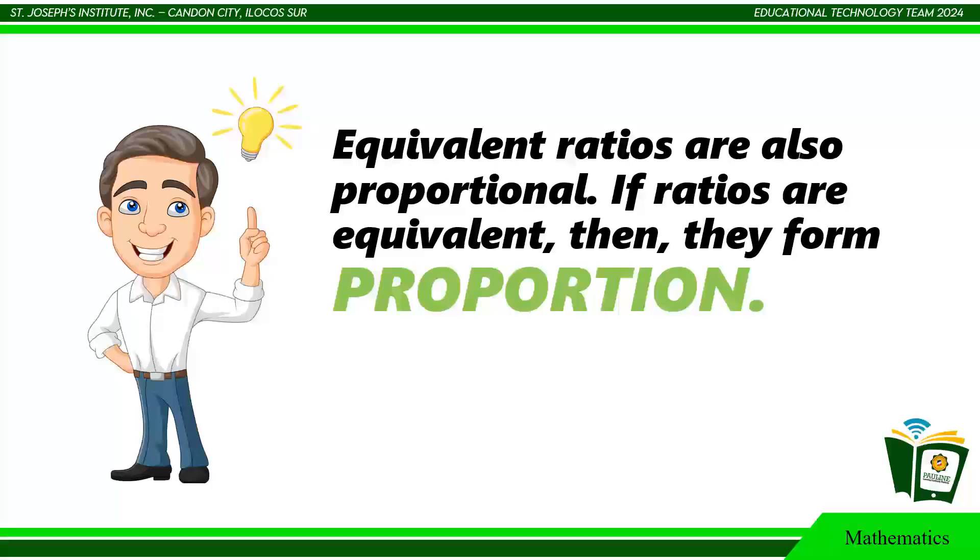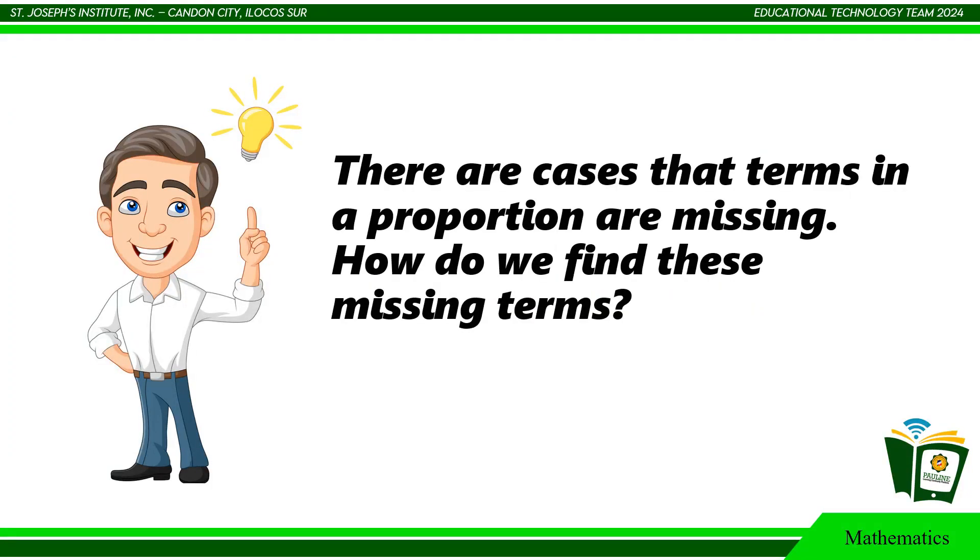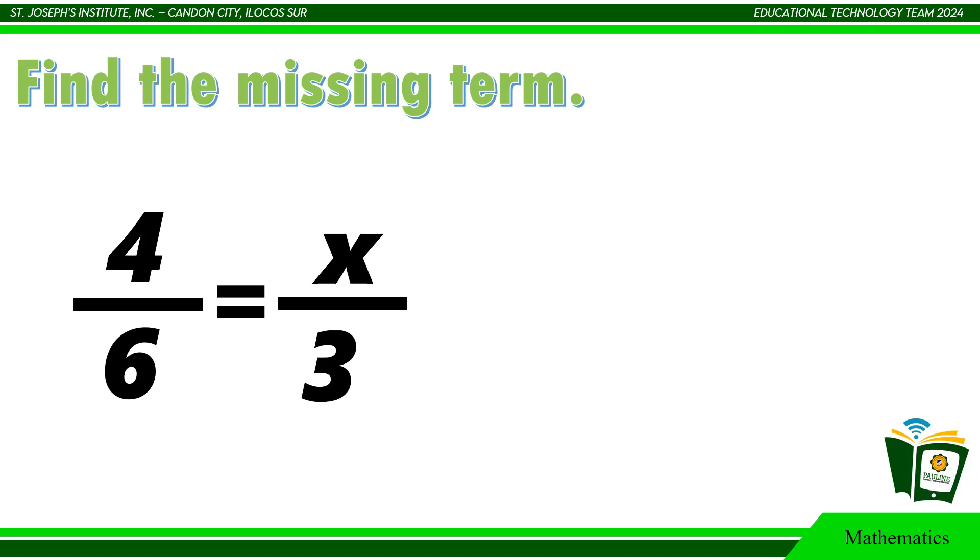There are cases that terms in a proportion are missing. How do we find these missing terms? For example, find the missing term of the proportion. 4 is to 6 equals x is to 2.